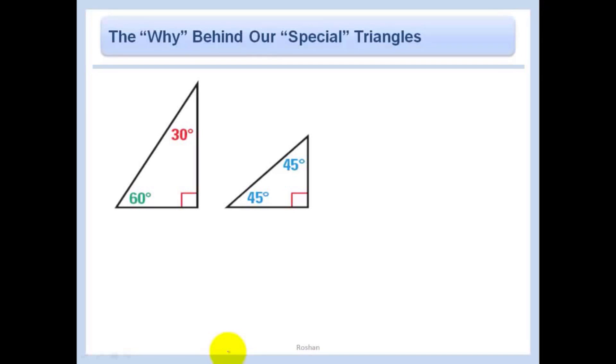The why behind our special triangles. So why if this is 1, this is 1 half, and this is root 3 over 2, and if this is 1, then this is root 2 over 2, and this is root 2 over 2. Why? I told you everything in math makes sense, you don't have to memorize anything. Well, this doesn't make a lot of sense right now, does it?